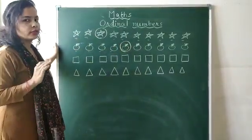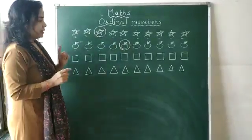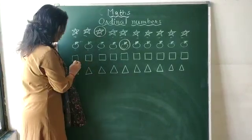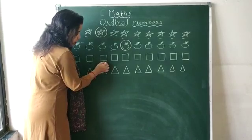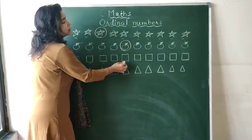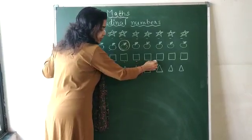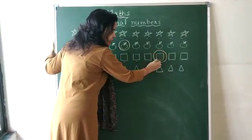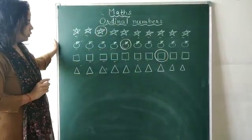Now you will tell me 8th number square. Okay? Yes. So, you will count with me. 1st, 2nd, 3rd, 4th, 5th, 6th, 7th and yes, it's 8th. Right?